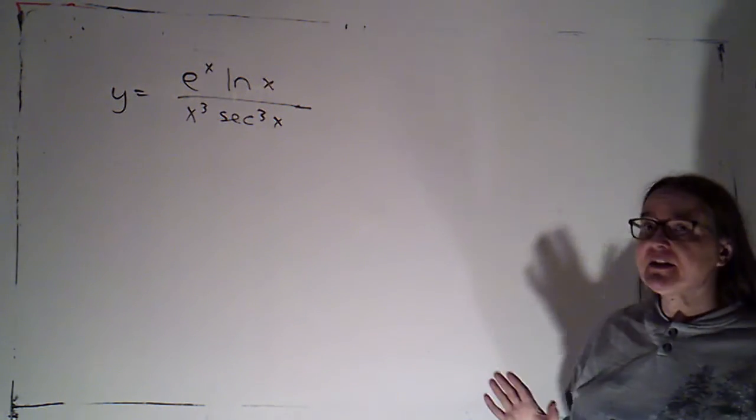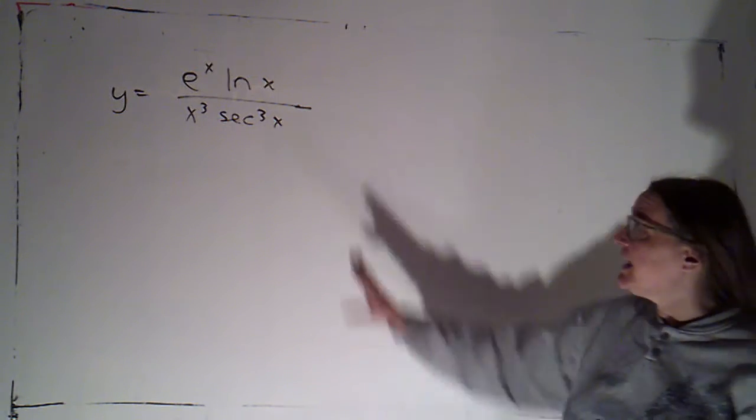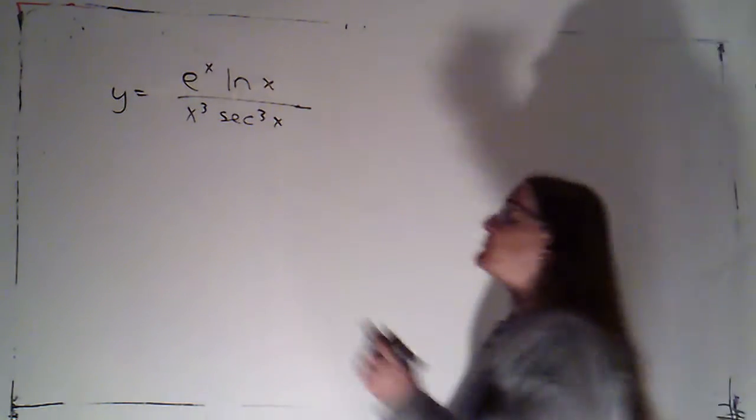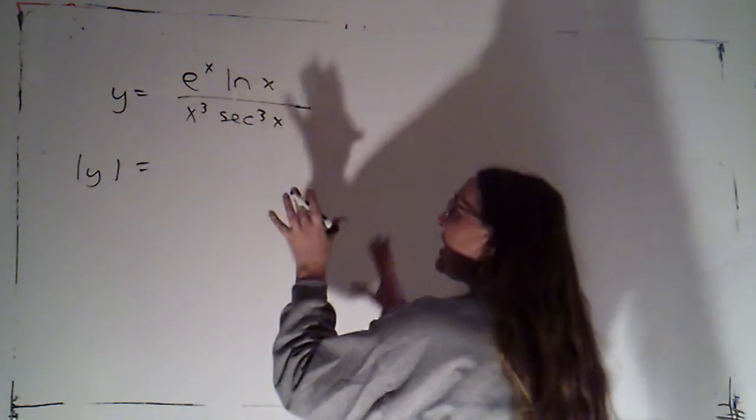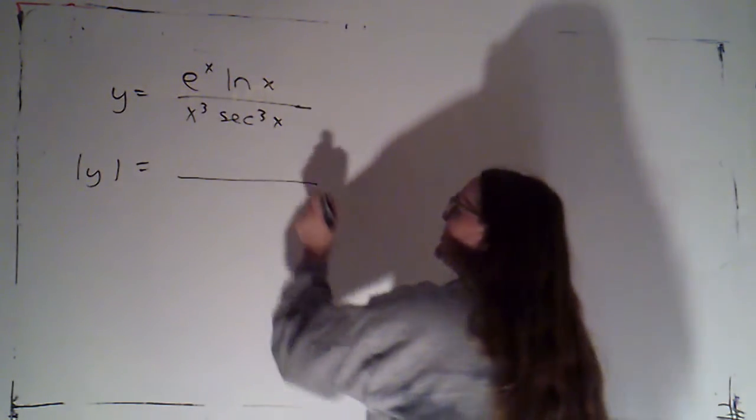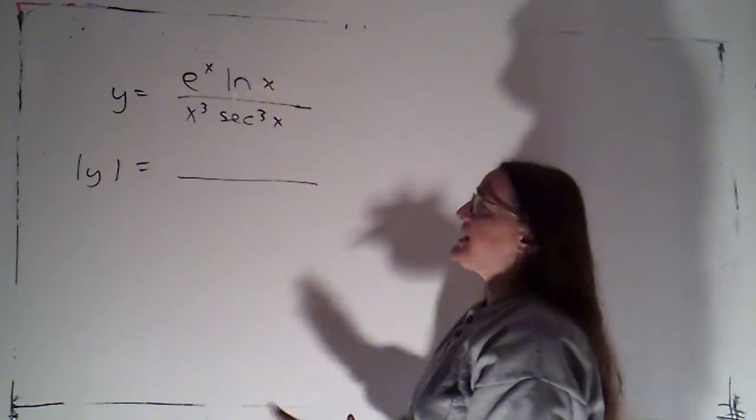So I know I want to take the log, but I can't take the log of anything that's negative, and this is sometimes negative. So I'm going to first of all take the absolute value. And I know that I can distribute that absolute value to each piece.